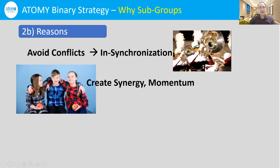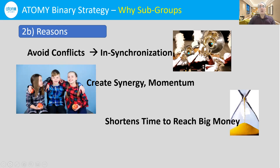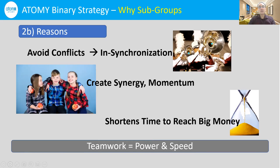A second reason is that keeping people in subgroups creates synergy and momentum. People get excited when they start to receive $60 checks and start to enjoy the products, and they share with each other. Everybody is going to benefit from not only the products but the PV, and they're going to share that PV. That's why we keep them together in a subgroup on the same line. Also, by having subgroups, it shortens the time for us to reach the big money in Atomy. Teamwork with subgroups equals power and speed in the Atomy compensation system.